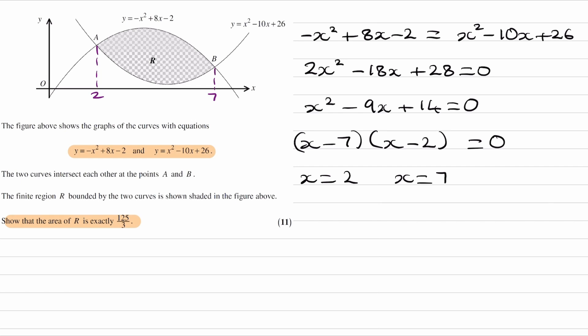Okay, so now we know that, we can first consider the integral of the top curve. So that would be the minus x squared plus 8x minus 2. The integral of this between 2 and 7.